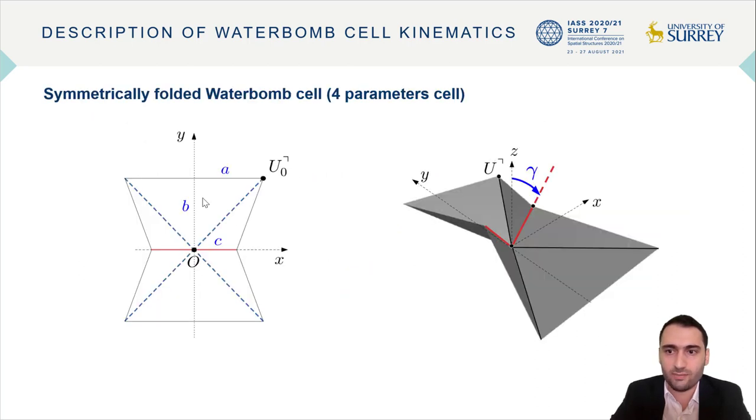So we have this base pattern which can be parameterized using three parameters a, b, and c that correspond to these lengths, and parameter gamma which is the angle between z-axis and the mountain fold here. And this parameter controls the folding process, so when gamma is 90 degrees, the cell is fully flat.